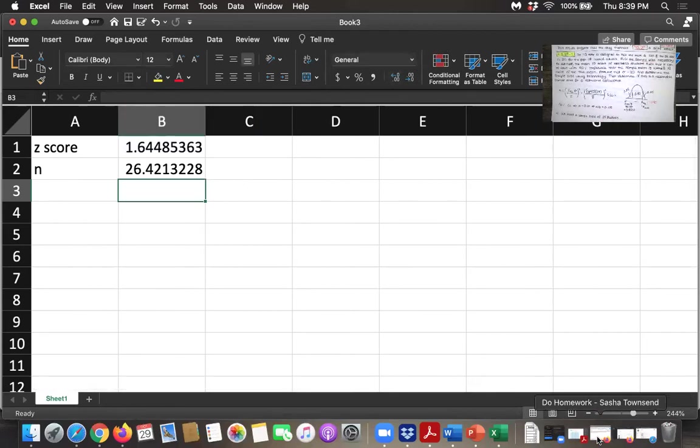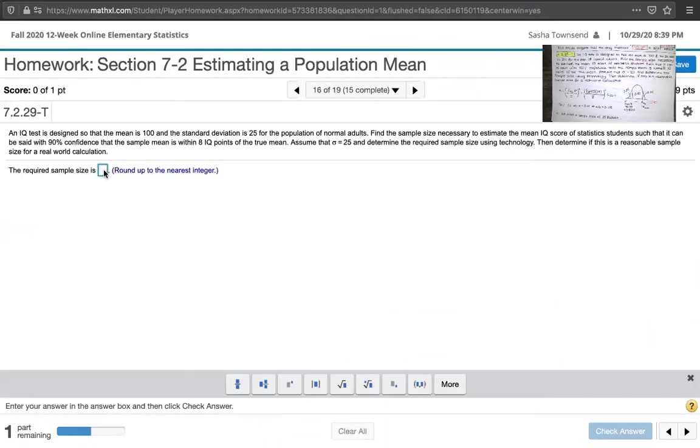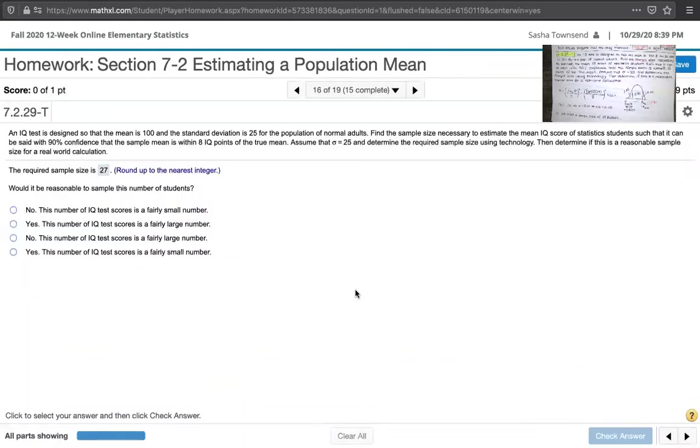Let's look at the homework. It says the required sample size is blank and it's 27 students. And then the next part of the question says, would it be reasonable to sample this number of students?